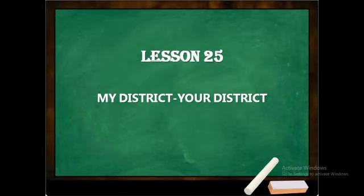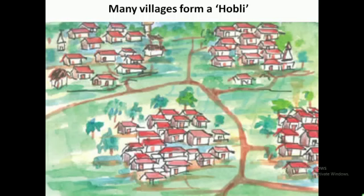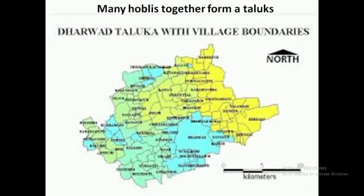The lesson number is 25: My District. Here you can see some houses — it is a village. There are many houses in a village. You can see many villages; there are four villages shown here. Each village has got many houses. When many villages come together, they form a hobli.